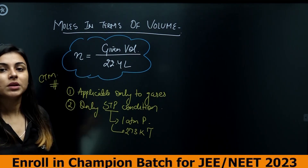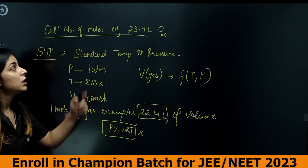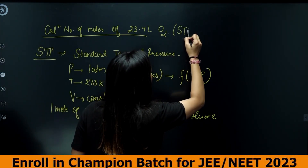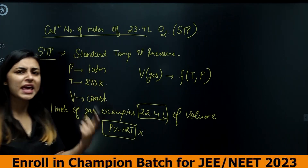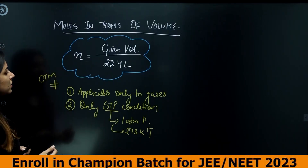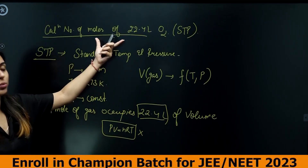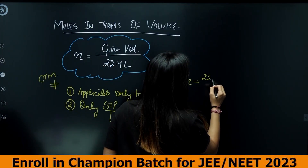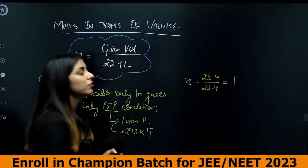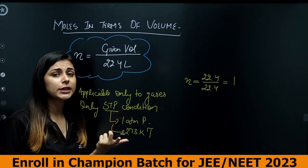Let's apply this: Calculate number of moles in 22.4 liters of O₂ at STP. Since it is a gas and STP conditions are given: number of moles = 22.4 ÷ 22.4 = 1 mole of O₂.